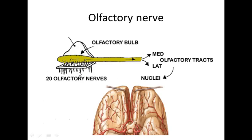The fibers of these receptors extend upward through the roof of the nasal cavity, through the cribriform plate of the nasal cavity — cribriform means it is perforated by the fibers of the olfactory nerve. These fibers pass from the cribriform plate to enter the cranial cavity, entering the anterior cranial fossa, and end in the olfactory bulb. The olfactory bulb then forms the olfactory tract, which divides into medial and lateral stria to end in the olfactory cortex.